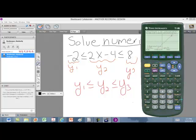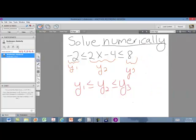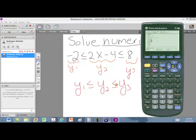If we go to our y equals, notice I still have the equations in y1, y2, and y3, just like I did before, where the left side is our y1, the middle is our y2, and the right side is our y3. So we're going to be looking for when y1 is less than or equal to y2, which is less than or equal to y3. So first thing you want to do is enter them in.